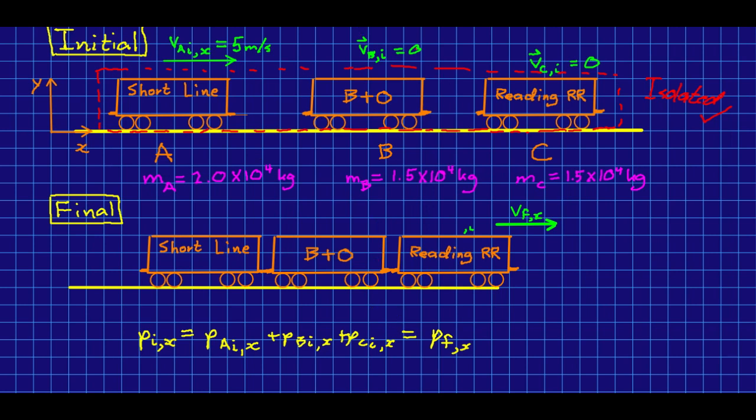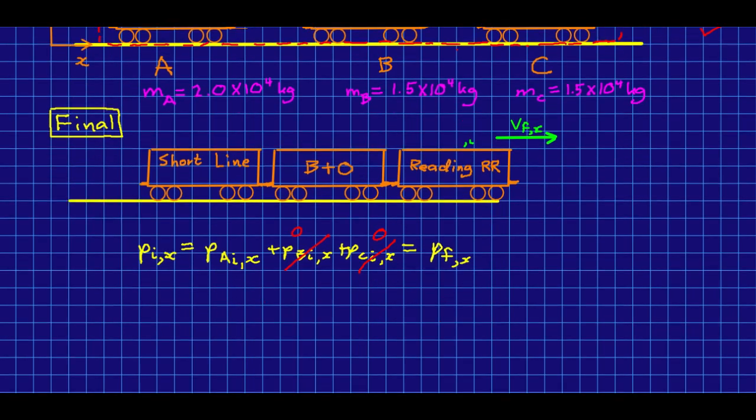Right away we know initially these two cars are stationary, so these two momentums are both zero. And we can now expand things out because the momentum of car A initially is just the inertia of car A times its x component of velocity. The final, that's going to be the inertia of the total group of cars because they are at this point all moving along at the same velocity. So we can just say mA plus mB plus mC all times the thing we actually want, which is the final x component of velocity of the three cars together.